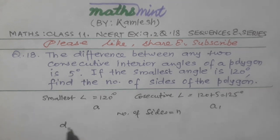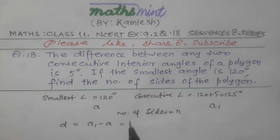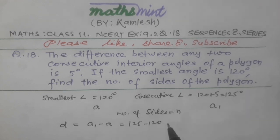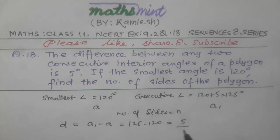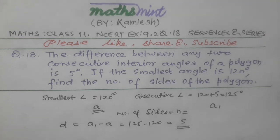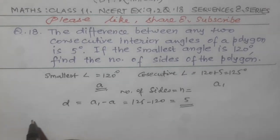Now, D common difference is equal to A1 minus A equals 125 minus 120 equals 5. So D is here, A is here, and N is here.